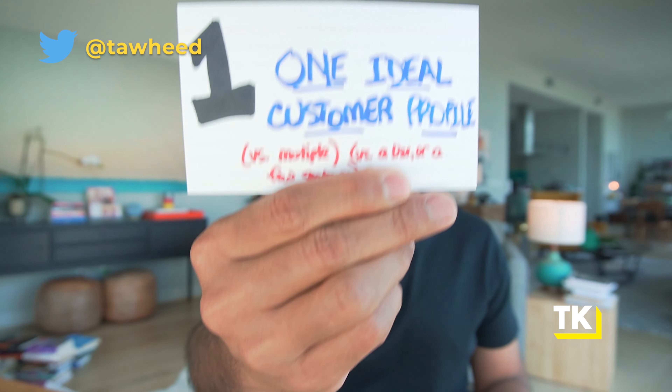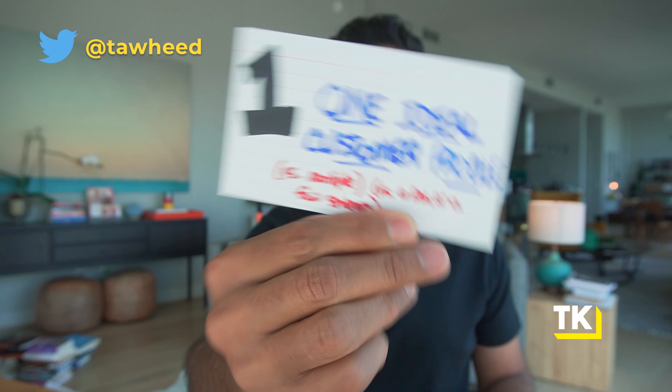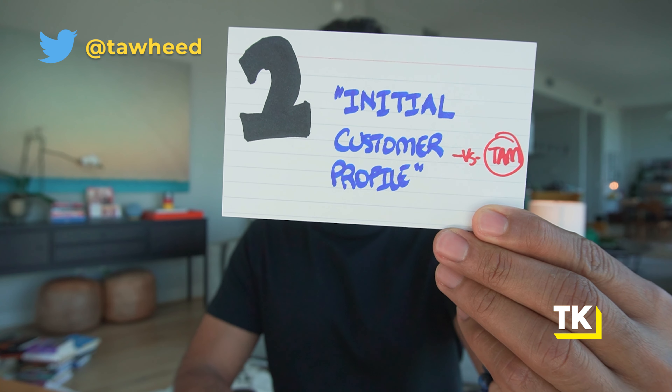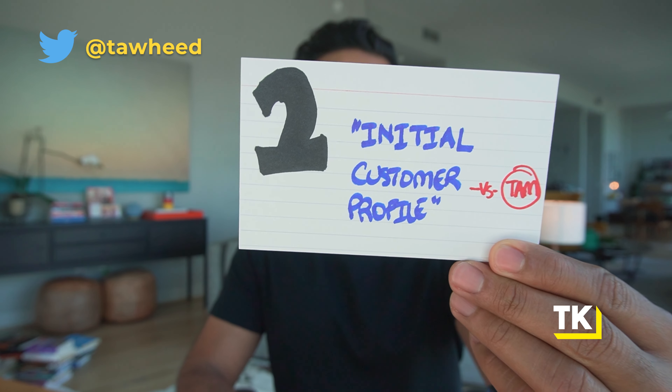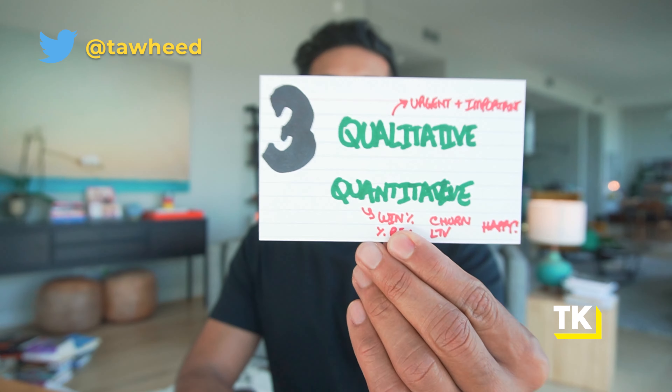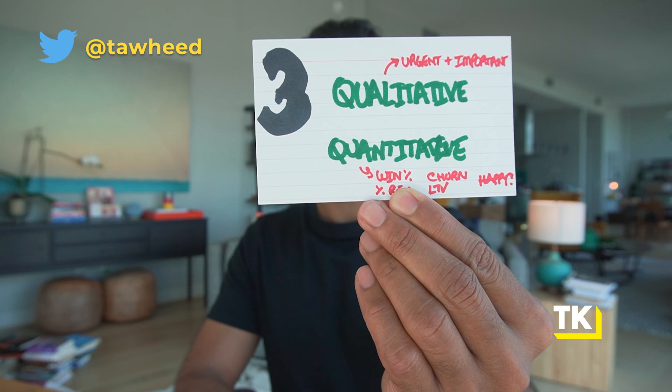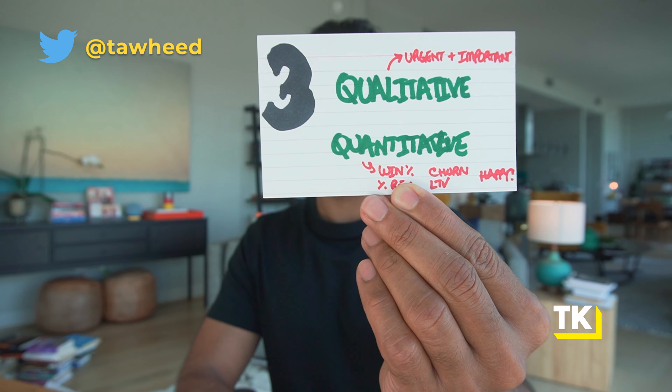To recap: for your ideal customer profile — principle number one, have one ideal customer profile, not multiple. Number two, think of it as an initial customer profile; make sure your ICP is not just a representation of your TAM, because then you won't know how to focus your go-to-market strategy — no one has unlimited resources for marketing and sales, so the more focused you go, the more successful you'll be. And number three, apply both a quantitative and qualitative lens to figure out whether your ICP is any good before you put resources toward it.